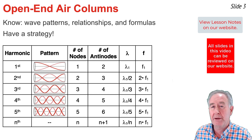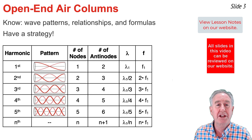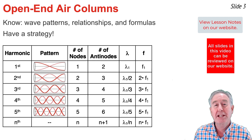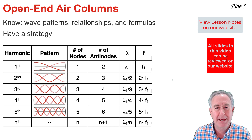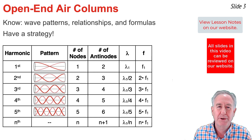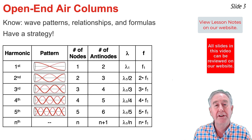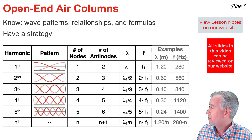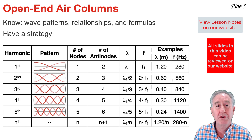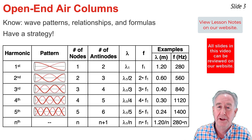You'll notice as you go down the column that the wavelengths get smaller. That's because the wavelength of the nth harmonic is always the wavelength of the first harmonic divided by n. For frequency, you'd take the frequency of the first harmonic and multiply by n in order to find the frequency of the nth harmonic. These two columns show examples of how to do those calculations.